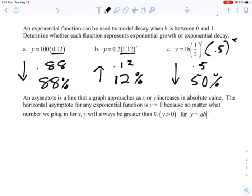I talked about this before. We're moving on to asymptotes. It's a line in the graph as x approaches, or y approaches, infinity, really. The horizontal asymptote for any exponential function is y equals zero, because no matter what number we plug in for x, the y will always be greater than zero.